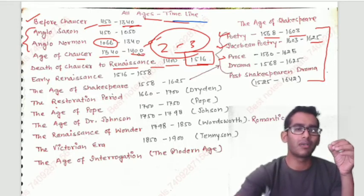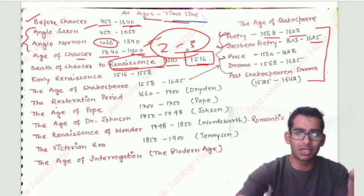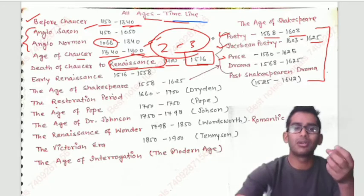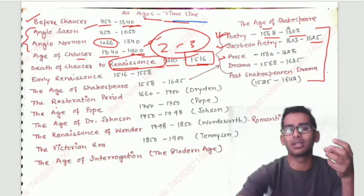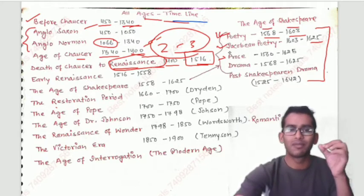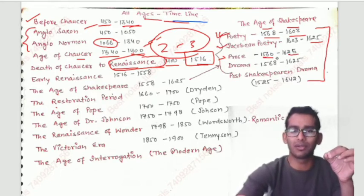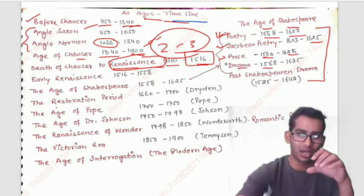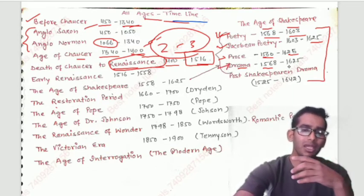When we talk about the Renaissance, it means the rebirth of knowledge. In English literature, during this period all things developed. Poetry developed from 1568 to 1603, Jacobean poetry was 1603 to 1625, prose was 1562 to 1625, and drama was 1568 to 1625. Drama was the most developed literary form in this period.